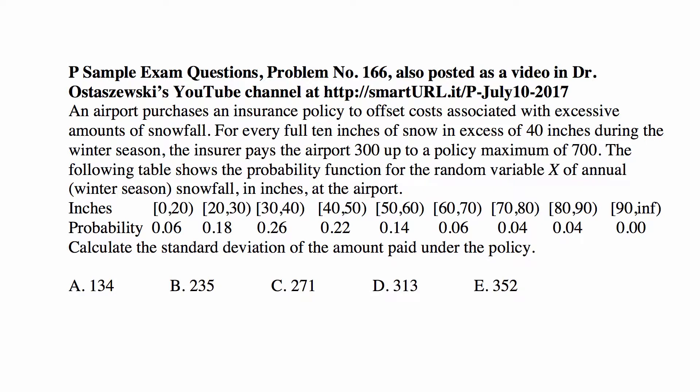of snow in excess of 40 inches — notice this means that the snowfall really has to be 50 inches or more because it has to be full 10 inches over 40 inches — during the winter season, the insurer pays the airport 300, up to a policy maximum of 700. The following table shows the probability function for the random variable X of annual winter season snowfall in inches at the airport.